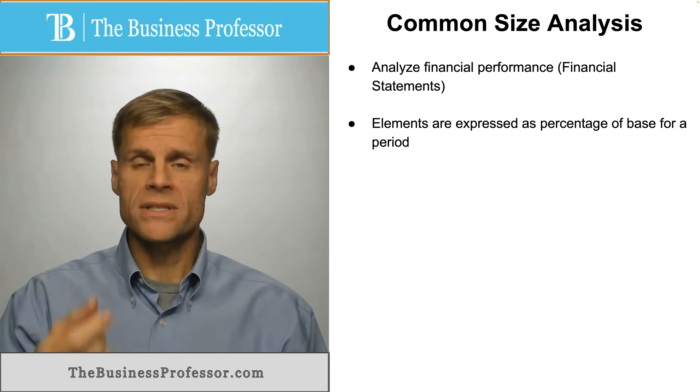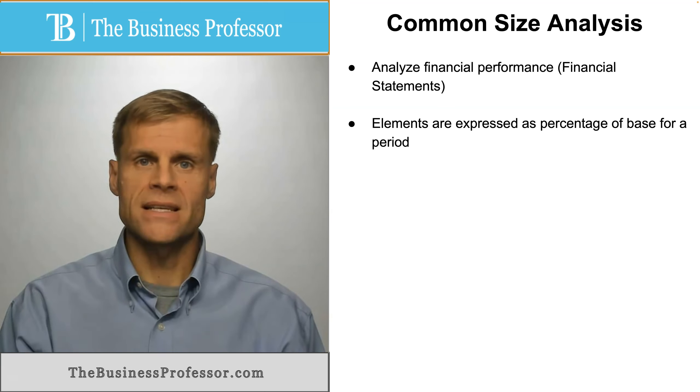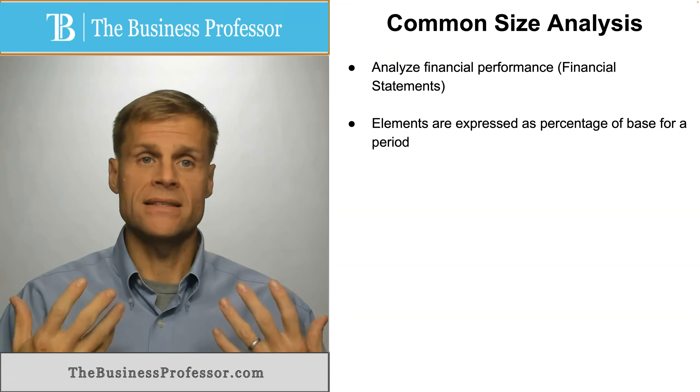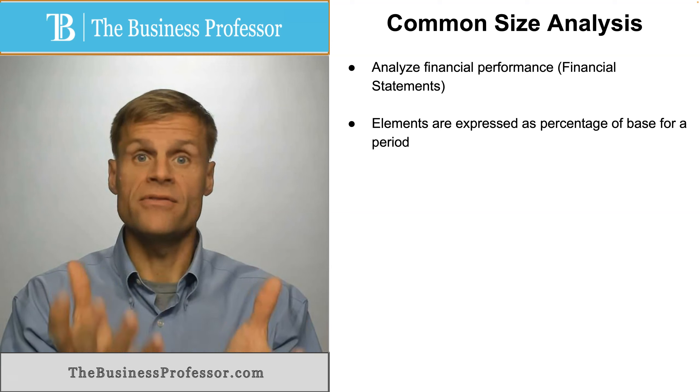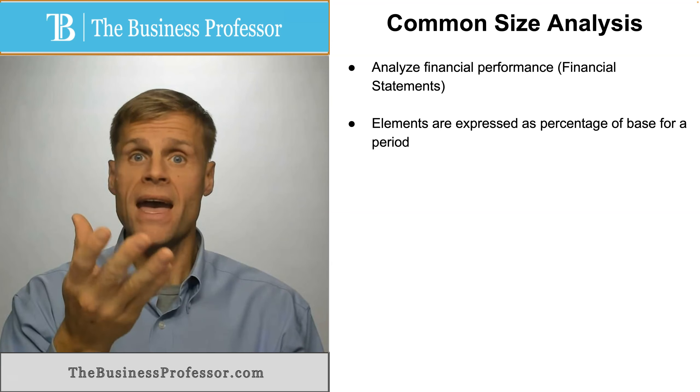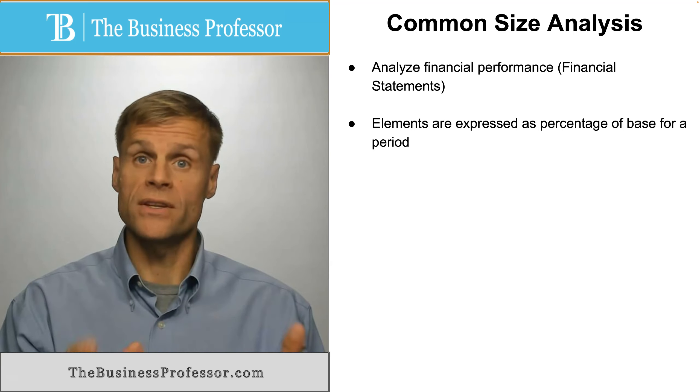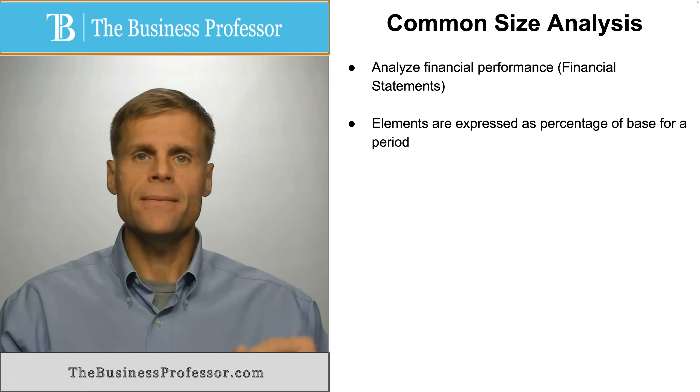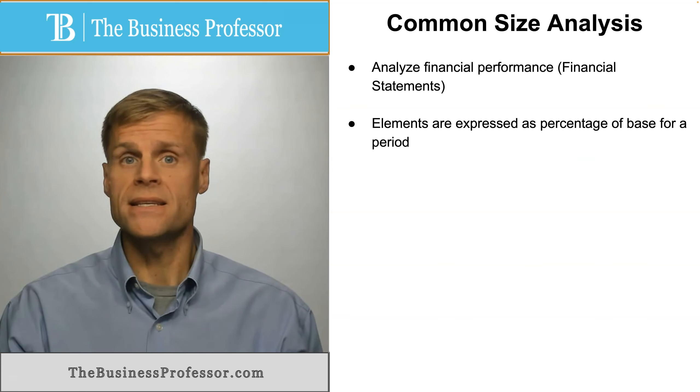And you're saying what percentage that metric makes up of that larger amount. For example, cash is a type of asset. If you look at the whole of assets, what is the value of all the assets, and you look at cash, the amount of cash you have, the value is going to be some percentage of the total assets. So you're taking this performance metric as a percentage of the base in this scenario.